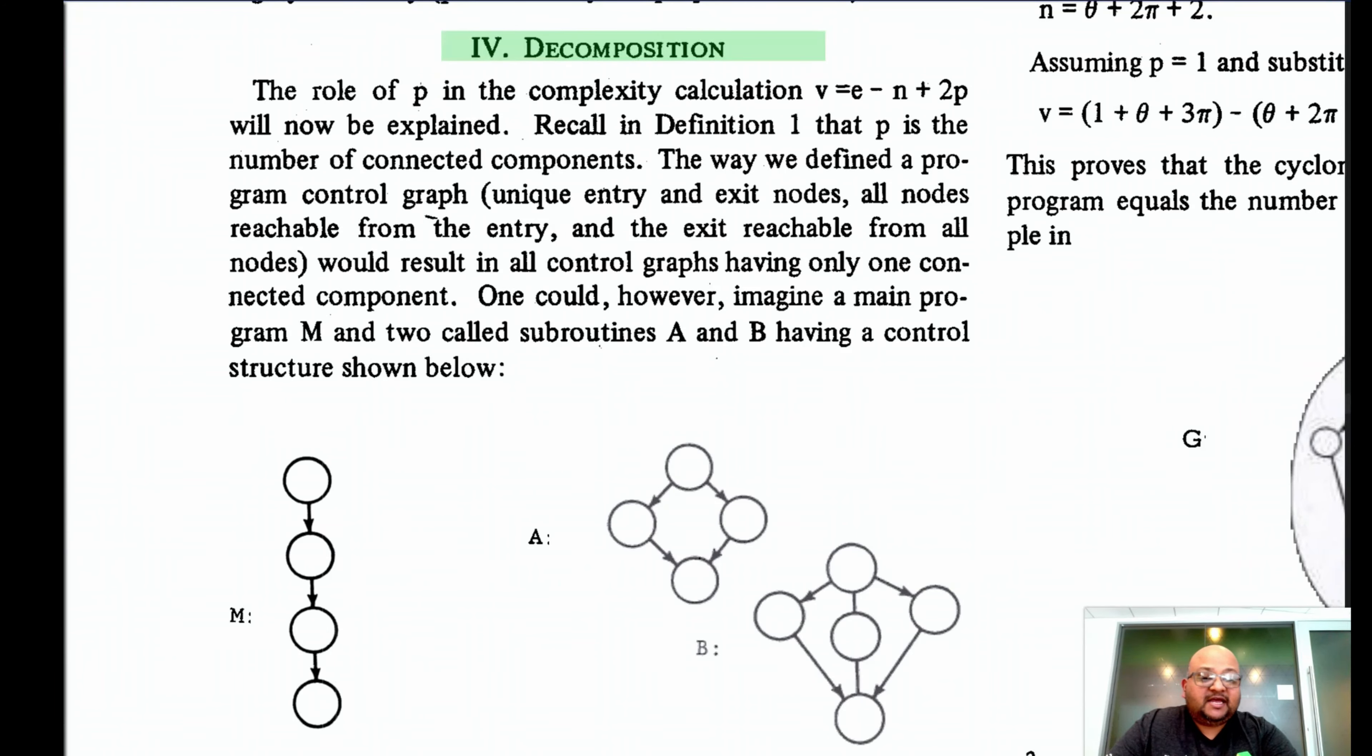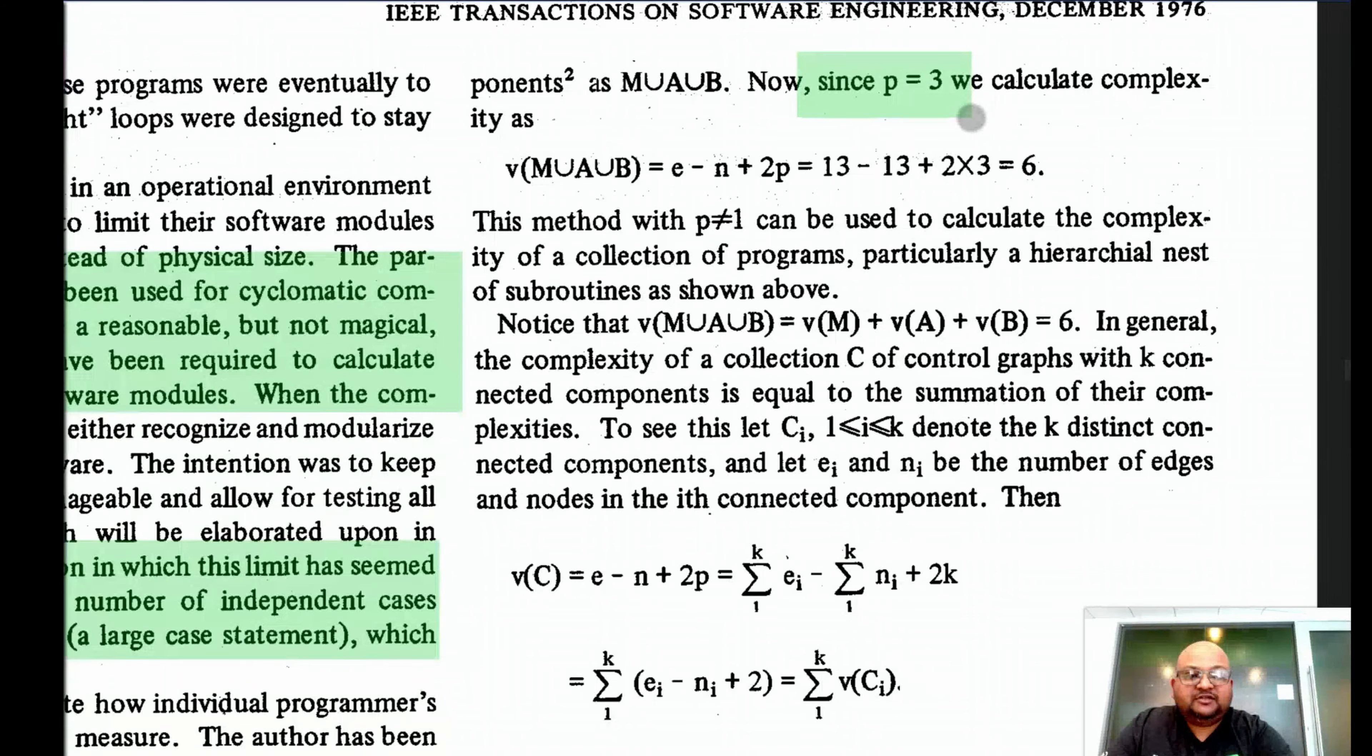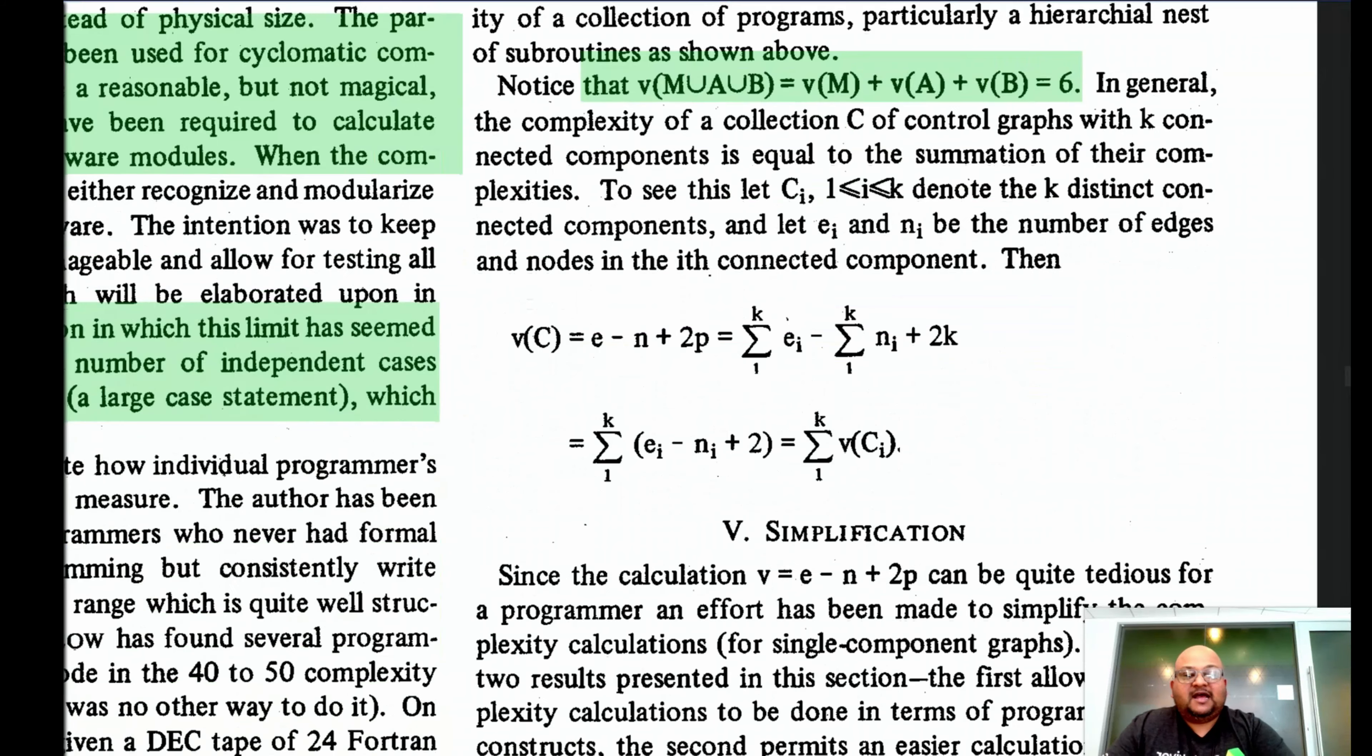Now let's look at how cyclomatic complexity behaves when a program is decomposed. And this will bring us to why we use connected components in the definition of cyclomatic complexity. If you consider a main program that calls two subroutines A and B, in this case we have three connected components and the cyclomatic complexity of the entire program is six. We note that cyclomatic complexity is linear over addition in that the complexity of three components is the sum of the complexity of the individual components by themselves.